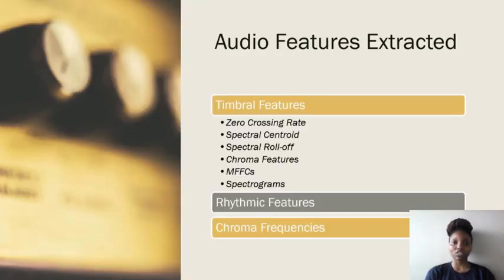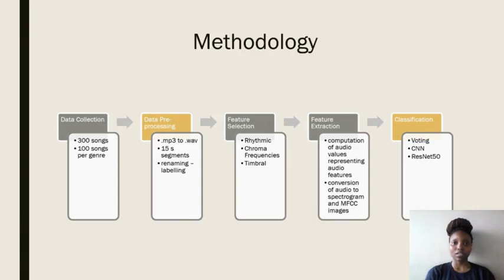The features that we extracted on each song include the temporal features, the rhythmic features, as well as the chroma frequency features. Our methodology started off with data collection — we collected at least 100 songs for each genre. We then pre-processed that data by converting all the MP3 files into waveforms and extracting 15-second segments from each song. We then labeled each song based on the genre it belongs to, extracted the features mentioned, and fed them into the different classifiers.